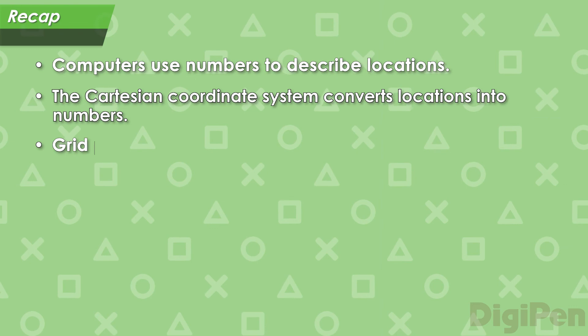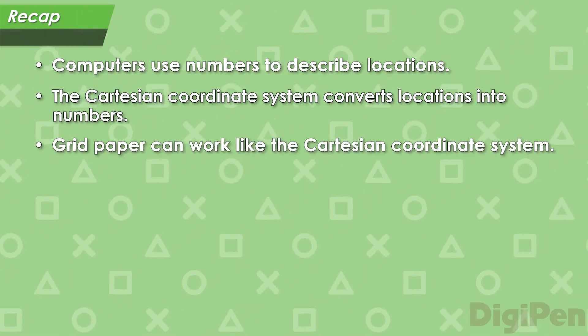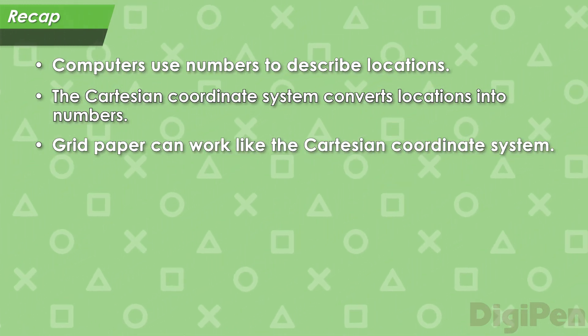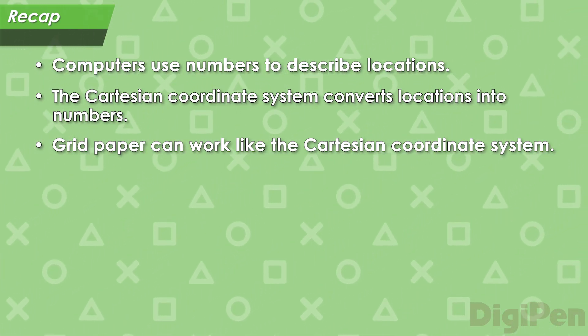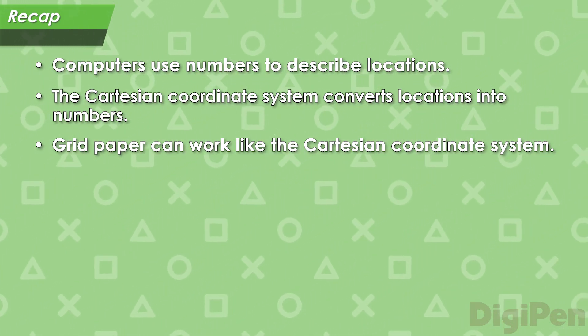We showed that grid paper can work in the same way as the Cartesian coordinate system, giving us a way to use numbers to describe where something is.